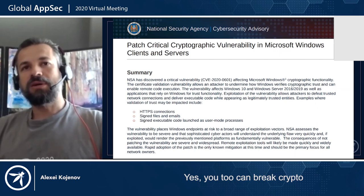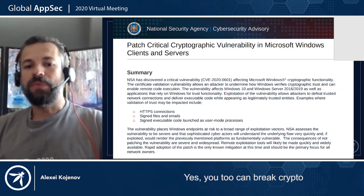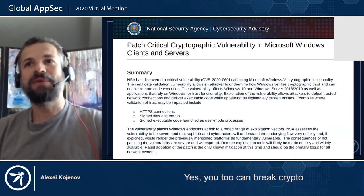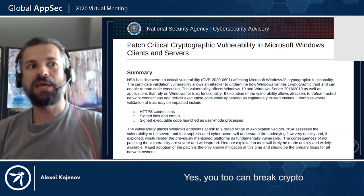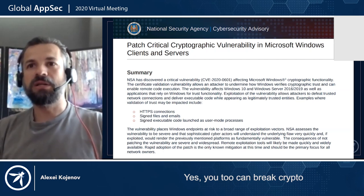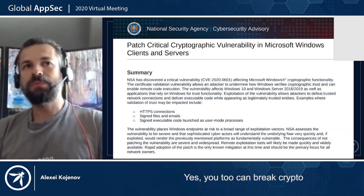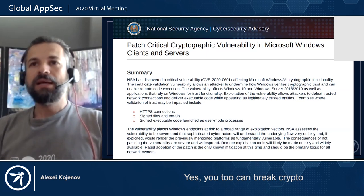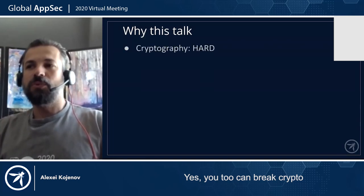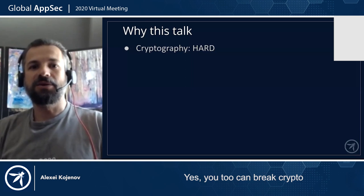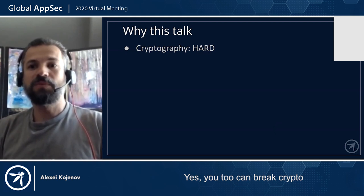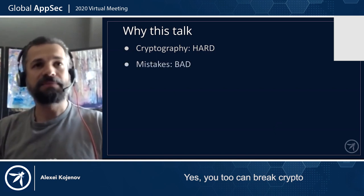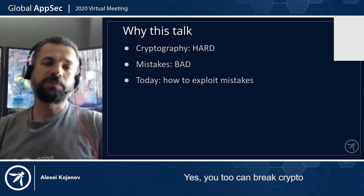If you read about this vulnerability, you probably noticed that the problem was not actually in the fundamentals of cryptography. It was not a problem with a certain algorithm, with some cryptographic scheme, or with a protocol. It was just one or two simple mistakes in a particular implementation. We all agree that cryptography is hard on multiple levels — from understanding what's going on to implementation itself — and there are so many ways to make a mistake. Today we're going to talk about how to exploit some of these mistakes in crypto.